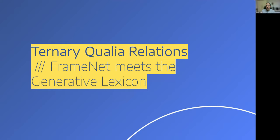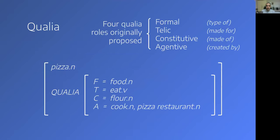To address this issue, FrameNet Brazil developed ternary qualia relations, which bring together frame semantics implemented as FrameNet and Generative Lexicon Theory. In the original proposition of Generative Lexicon Theory by James Pustejovsky, four types of qualia roles were proposed: the formal, the telic, the constitutive, and the agentive qualia roles.